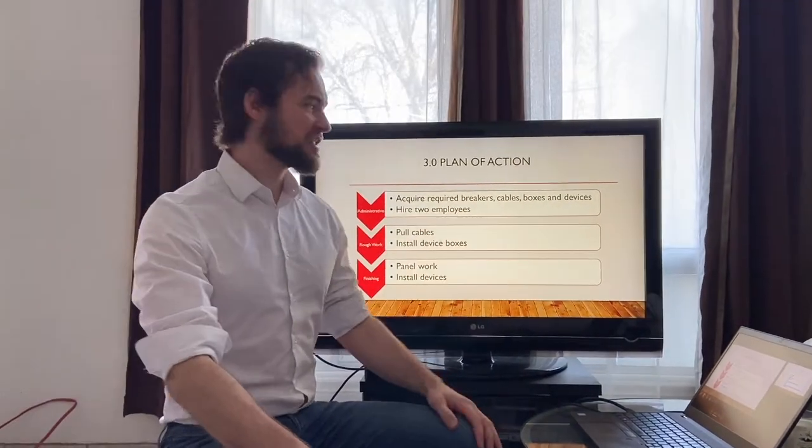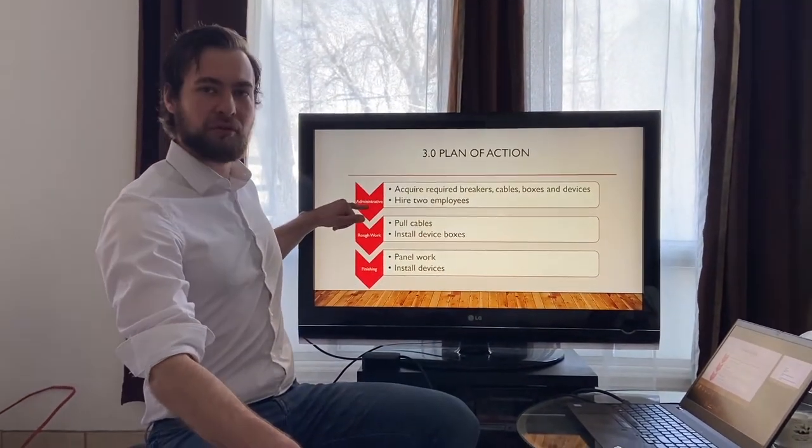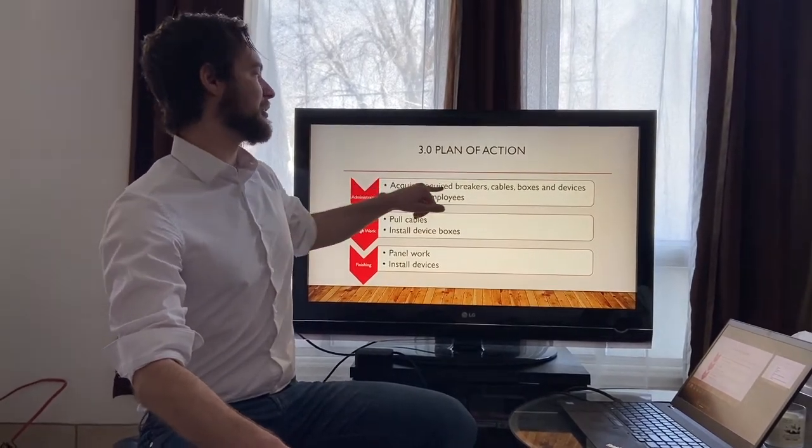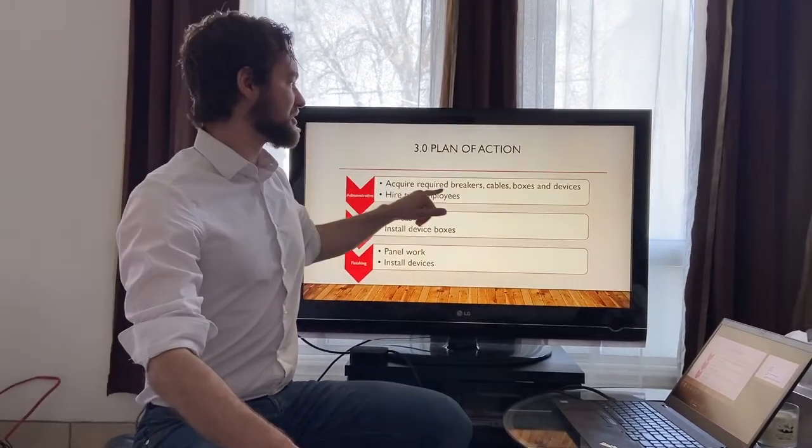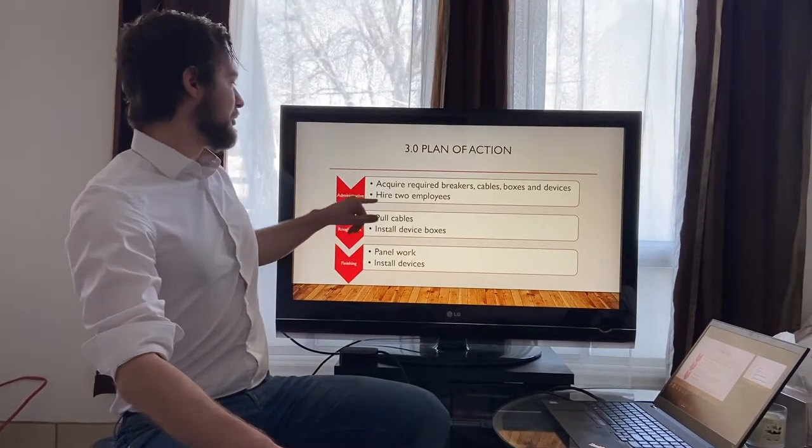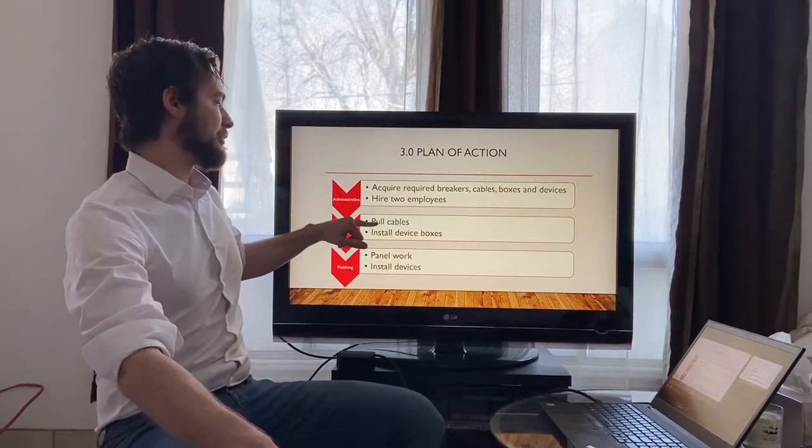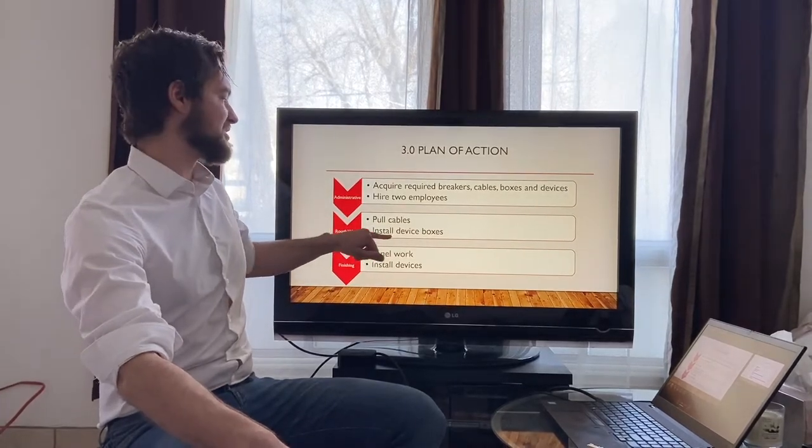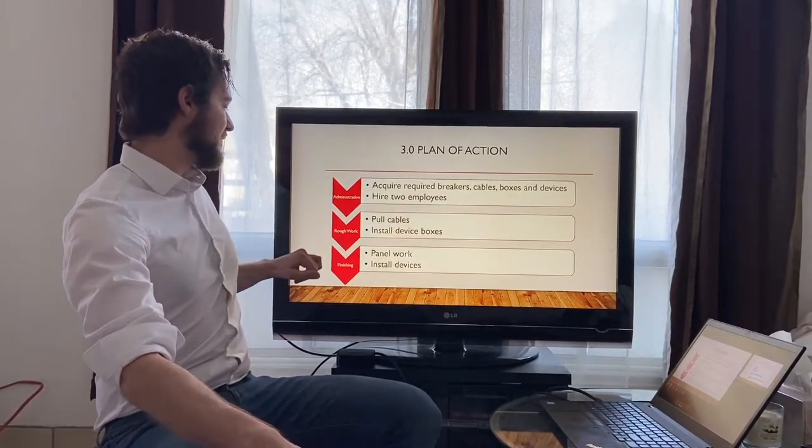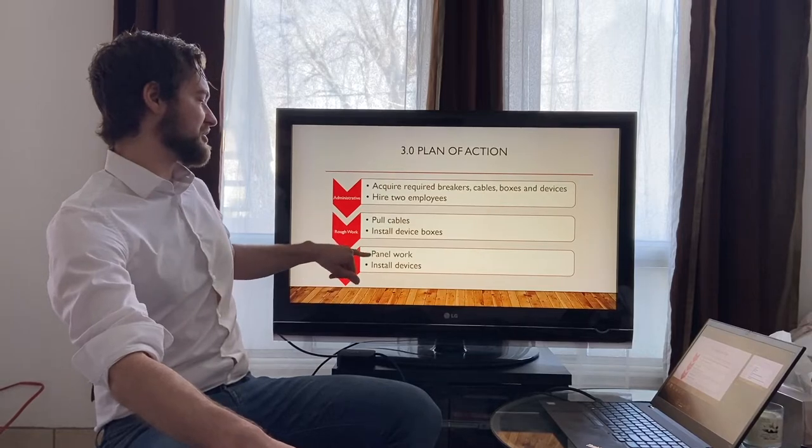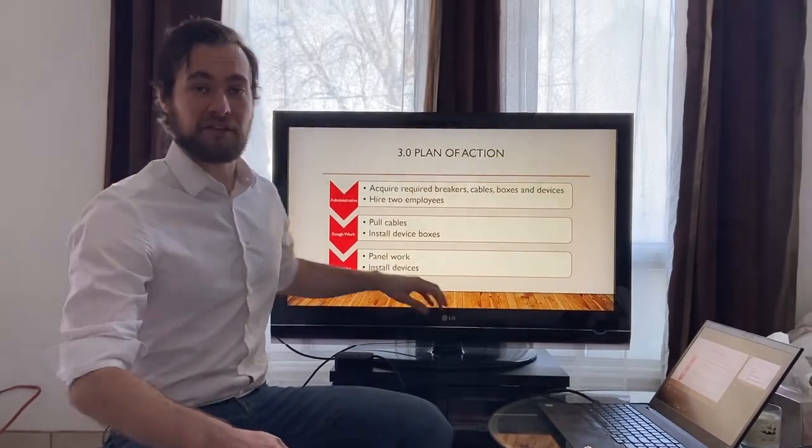So for the plan of action section, we got three steps. We got administrative work that has to be carried out before the job which is going to be acquiring and shopping the materials that I mentioned earlier. We have to hire two employees for extra hands. Then we have the rough work. This is where we actually pull the cables to the destined device boxes. And then we're going to have to come back for the finishing which is going to include the panel work and installing the devices as mentioned earlier.